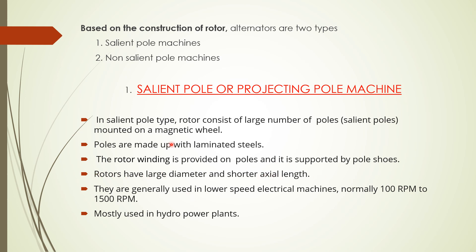Salient pole machines are normally used in low speed electrical machines. The speed range may be 100 rpm to 1500 rpm because they consist of a large number of poles, so they are mainly used in low or medium speed machines. Their main area of application is hydroelectric power plants — this point is also important for technical exams.